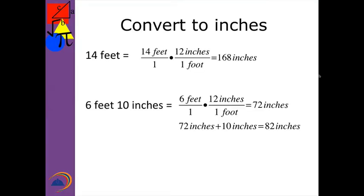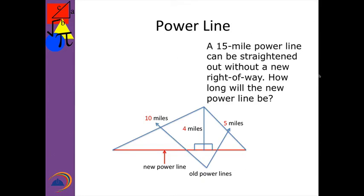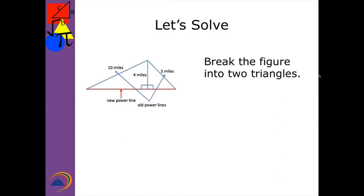Let's go back to our PowerPoint. Here's a power line question. A 15-mile power line can be straightened out without a new right-of-way. How long will the new power line be? The current line starts at the left, goes up 10 and down 5 miles, totaling 15 miles. Now they want one that goes straight. The first thing I want you to do is break this down into two separate triangles — the left-hand triangle and the right-hand triangle. Label them and label the missing sides A, B, C or X.